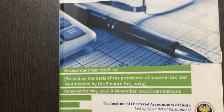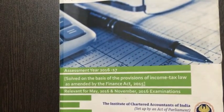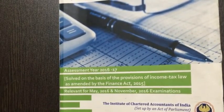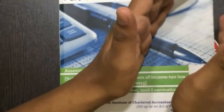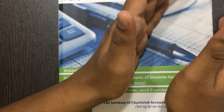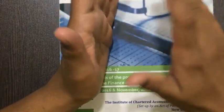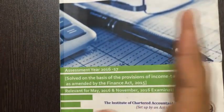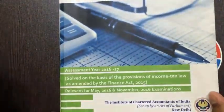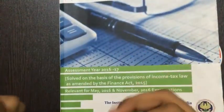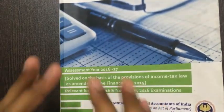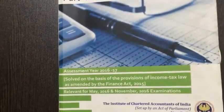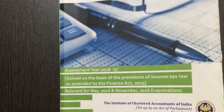The next lectures will be on PGBP, since people are asking for it and finding it a difficult head. As far as I have seen, PGBP is divided into four parts: one — depreciation; two — specified businesses; three — computation of income from business and profession to be added to total income; and four — presumptive income. The remaining tax audit and other parts are just theory that you can read on your own. For the practical sums you will need my assistance, so I will be giving you purely practical content. See you — I'll record the next lectures for you all.